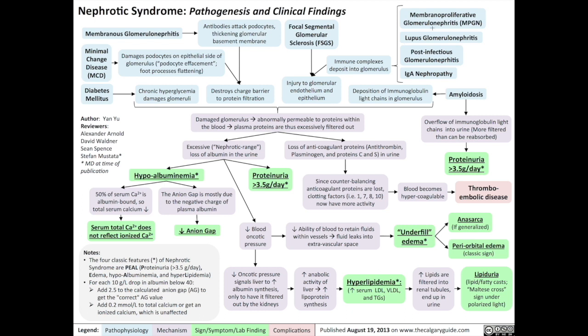Fifth, a cluster of kidney disorders including membranoproliferative glomerulonephritis (MPGN), lupus glomerulonephritis, post-infectious glomerulonephritis, and IgA nephropathy. Since they're all autoimmune diseases, they all deposit immune complexes into the glomerulus, which also directly injures the glomerular endothelium and epithelium.